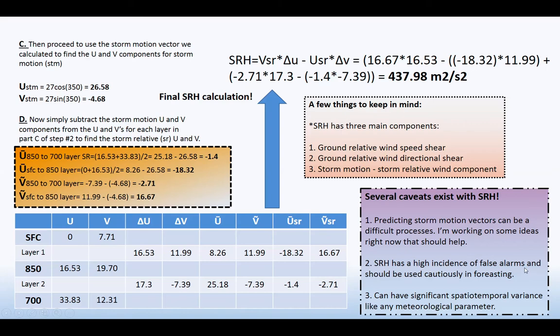So now we're going to proceed to use the storm motion vector we calculated to find the U and V components for storm motion. So 27 meters per second, this is from the storm motion that I just showed you. 27 meters per second times the cosine of 350. That's right here equals 26.58. And then for the V component of storm motion, 27 sine 350, that'll equal a negative 4.68.